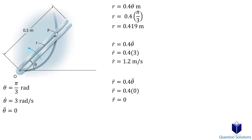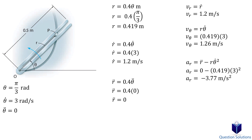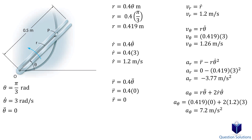Now that we have all the values, we find the radial and transverse components. Starting with velocity: the radial component is found using its equation, and the transverse component is found using its equation — just plugging in values and solving. For acceleration, the radial component is found using its equation; plug in what we know and solve. Then the transverse component is found using its equation, substituting known values. Those are our answers.